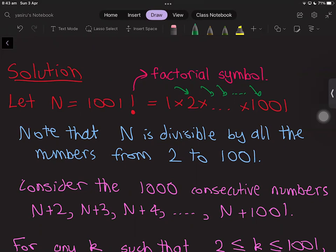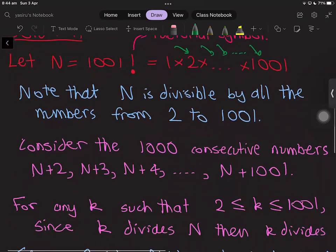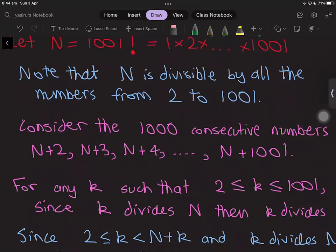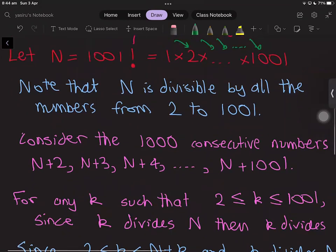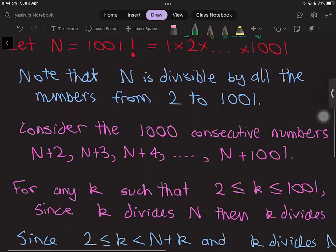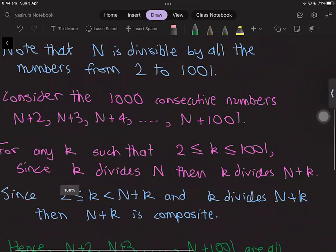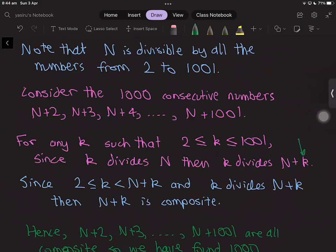For any k in the range 2 ≤ k ≤ 1001, we know that k is a factor of N from before. But this means that if we add the number k to N, we still get that k is a factor of N+k.